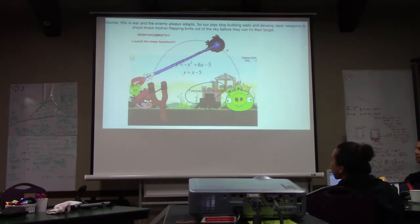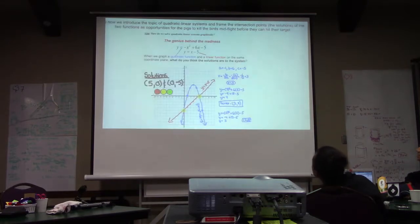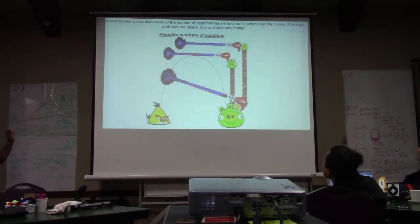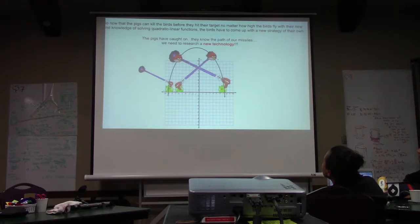Of course, this is a war, and the enemy always adapts. The pigs stop building walls and develop laser weapons to shoot the birds out of the sky before they can hit their targets. We introduce quadratic-linear systems, framing the intersection points of the two functions as opportunities for the pigs to kill the birds mid-flight. This also fosters a nice discussion of the number of opportunities to hit a bird over the course of its flight — two times? Maybe once? Or maybe we miss? Now that the pigs can kill the birds before they hit their target, the birds come up with a new strategy of their own.